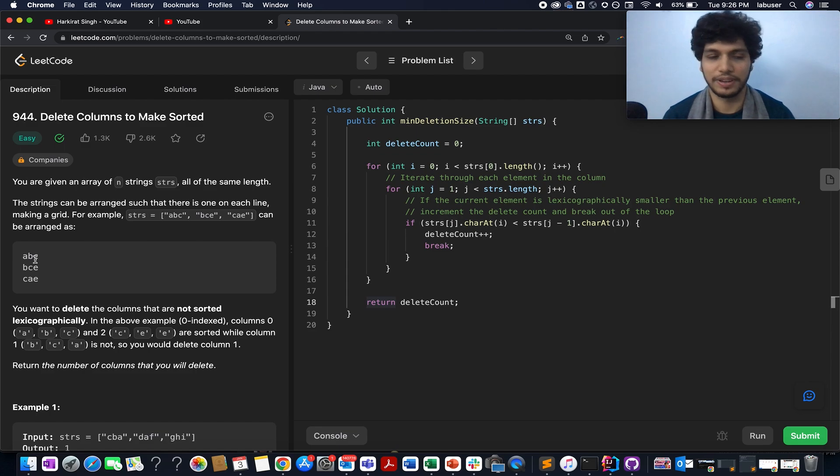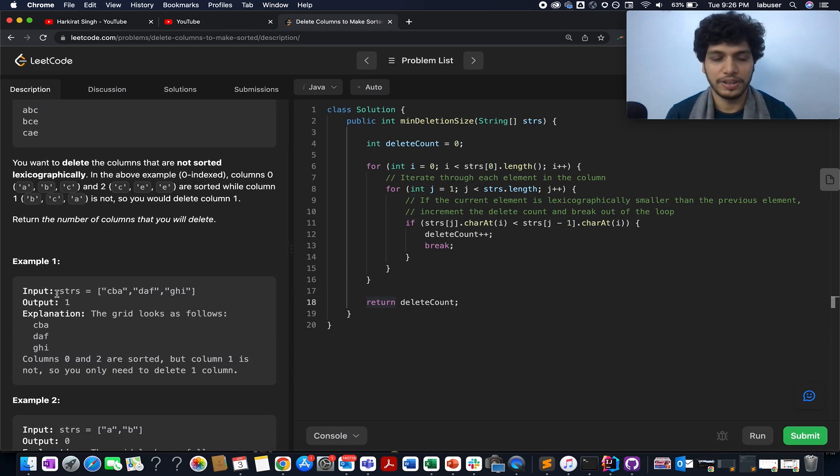Overall, we can finalize that the third column that we have happens to be lexographically sorted. So overall, how many columns were you able to identify that were lexographically unsorted? There was only one such column, and as a result of which the answer becomes one.